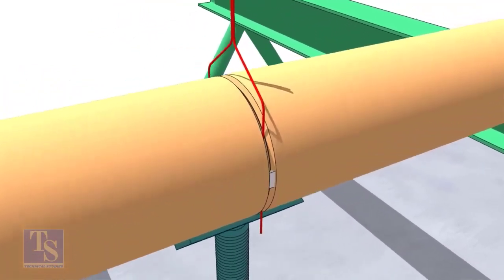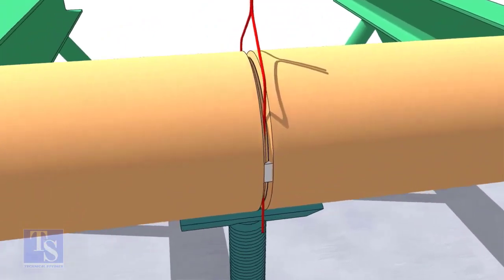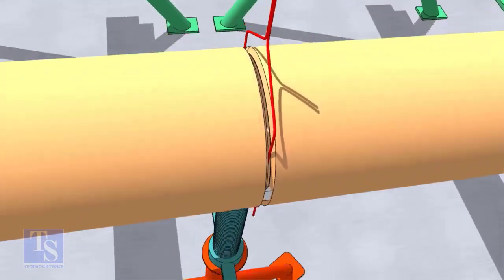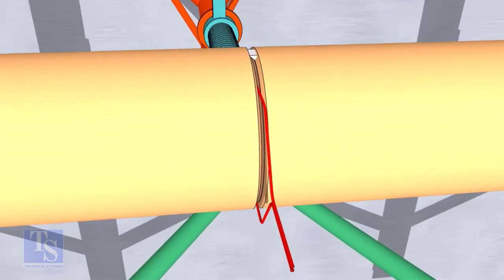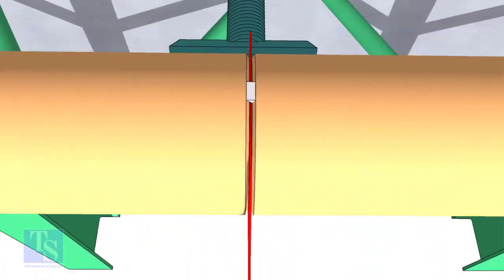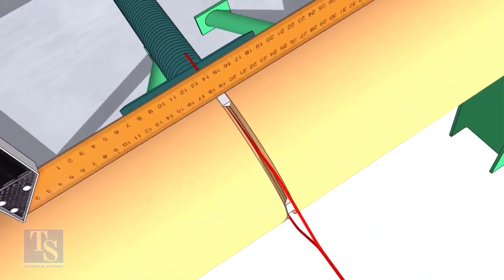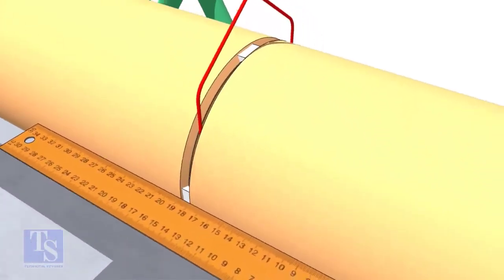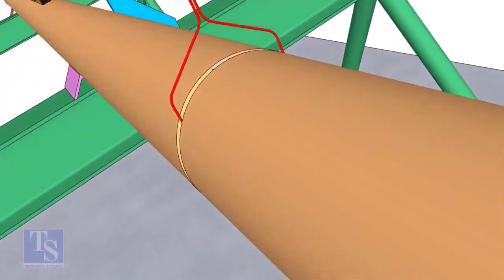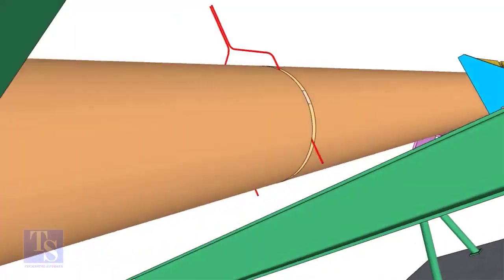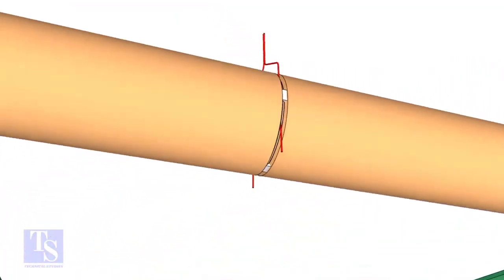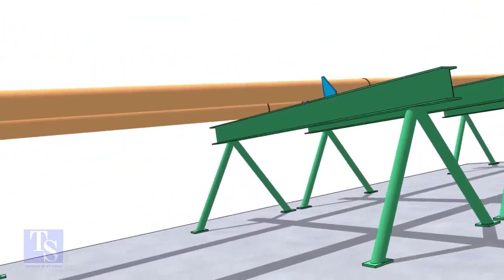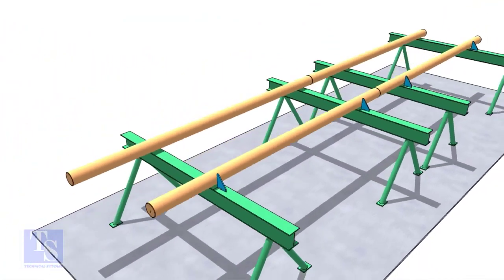Tack weld on both sides of the pipe, then the top and bottom of the joint. Don't forget to cross-check the overlap. Don't forget to cross-check the gap.